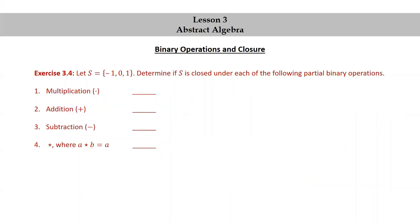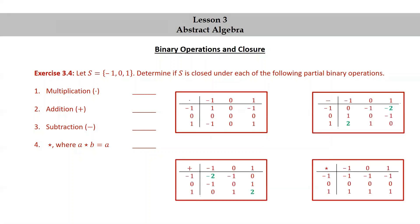Let's try another exercise. Let S equal the set consisting of negative 1, 0, and 1. Determine if S is closed under each of the following partial binary operations. Pause the video, try this exercise yourself, then resume to check your answers. This question is actually asking the same thing as the previous exercise, so using the multiplication tables we already drew: S is closed under multiplication, S is not closed under addition, it's not closed under subtraction, and S is closed under the operation star where A star B equals A.